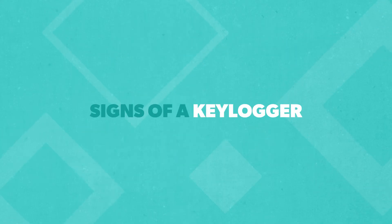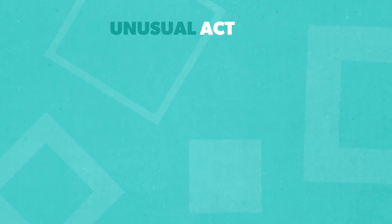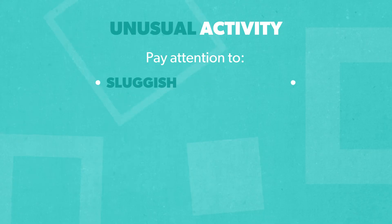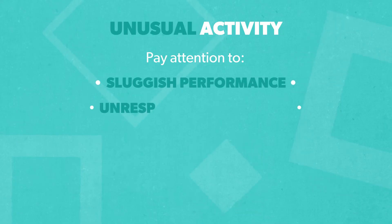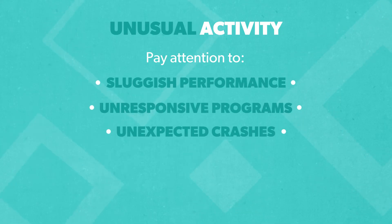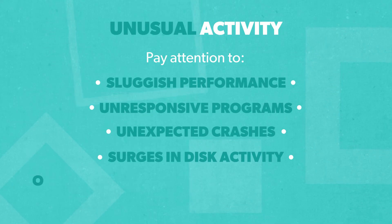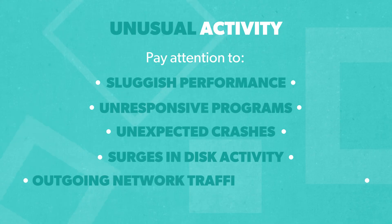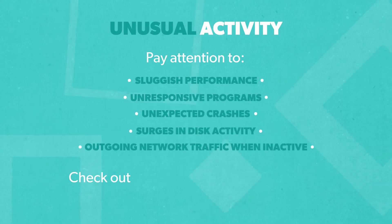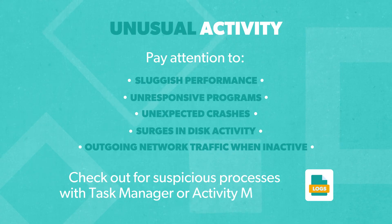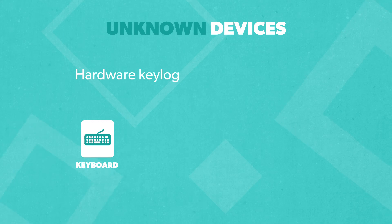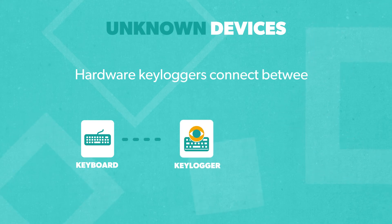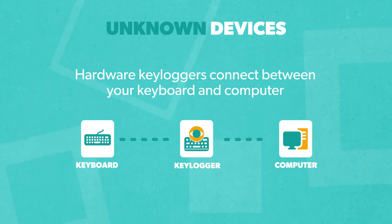It's tough to spot a sophisticated keylogger, but here are some key things to watch out for. Unusual activity: pay attention to sluggish performance, unresponsive programs, unexpected crashes, surges in disk activity, or outgoing network traffic when you're not using the internet. Check for suspicious processes with Task Manager on Windows or Activity Monitor on a Mac.